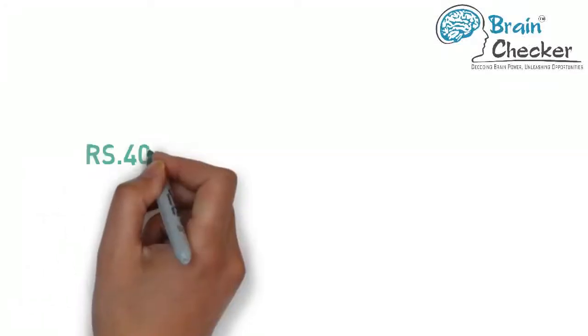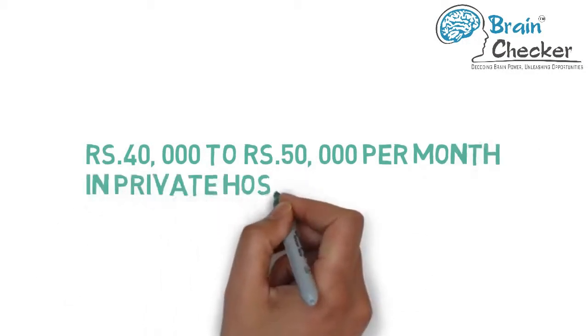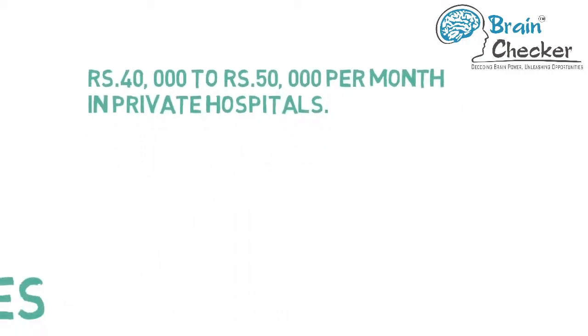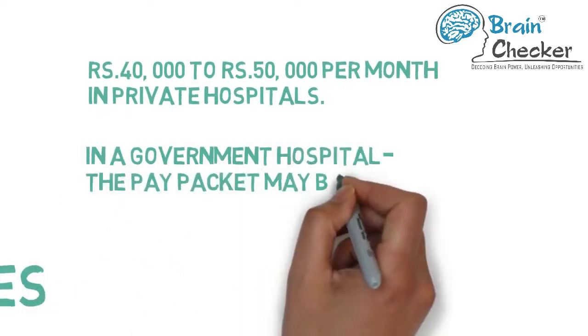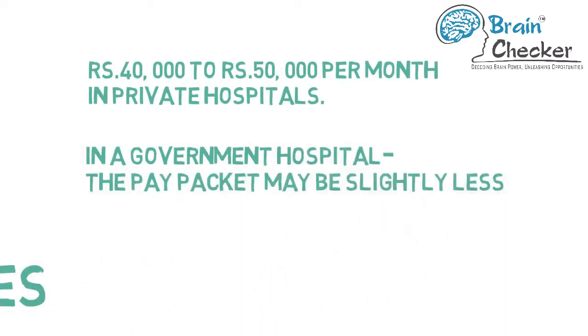Orthopedic surgeons can expect a starting salary of 40,000 rupees to 50,000 rupees per month in a private hospital. In a government hospital, the pay packet may be slightly less. The highest income an orthopedic surgeon could draw will be through private practice.